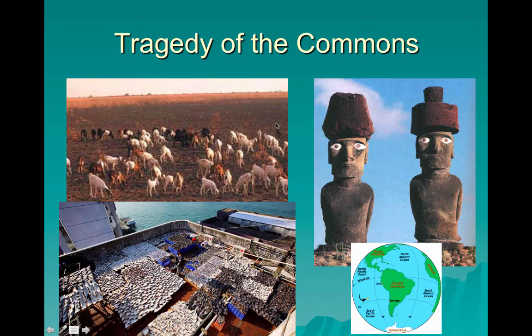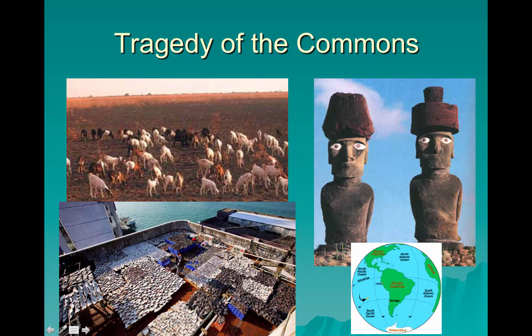Tragedy of the commons is where a resource is used by all and policed by none, so you end up with the resource becoming overused to the point that it's no longer useful to anyone. This term was coined in the mid-1960s by Garrett Hardin. On this slide you have two examples: the upper left is a grassland that has been overgrazed to the point it's now basically a dirt pit. The lower right shows shark fins that are drying — shark fin soup is harvested by catching a shark, slicing off its fin, and throwing the shark back. This has led to drastic declines in shark populations, which are responsible for eating largely dead and dying organisms — an important population control being wiped out.